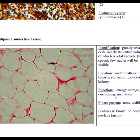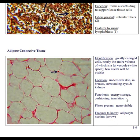Adipose tissue functions by storing energy — you can break down fat and convert it to sugar to power your body. It provides cushioning, especially for the kidneys, which are very delicate and need to be suspended in a soft cushion. It also provides insulation from the cold. In adipose tissue you see no fibers — just big bags of fat with an occasional squished nucleus.